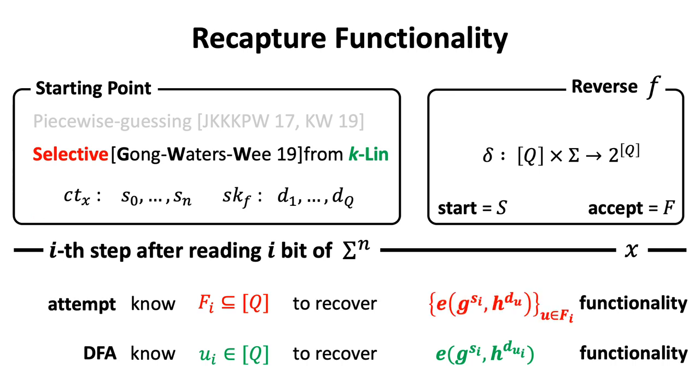A direct extension of partial result from a single state to a set of states is to define it as a set of values. Each of them corresponds to a state in the set Fi. However, this is insecure.